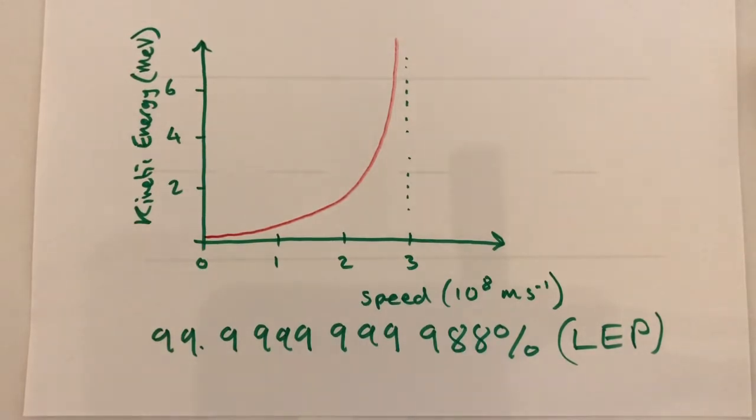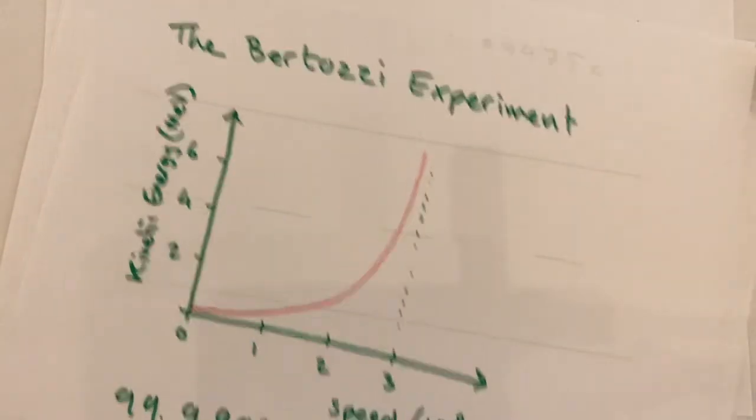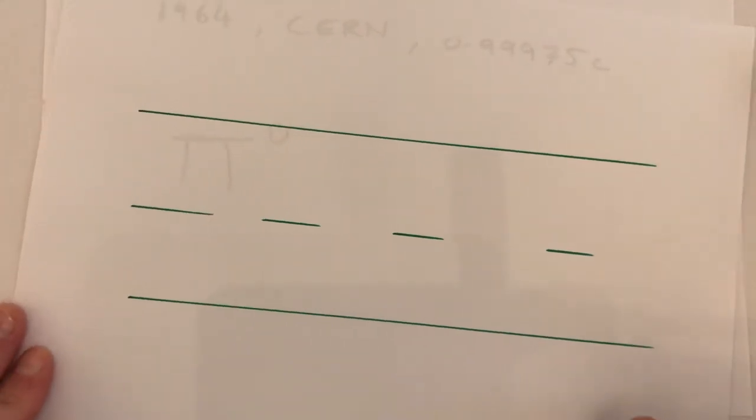Before we consider the speed of light and the second postulate, think for a second how the speed of a cannonball is not the same for all reference frames.